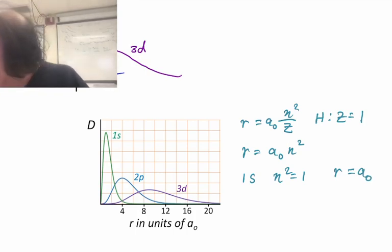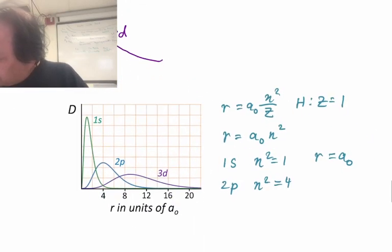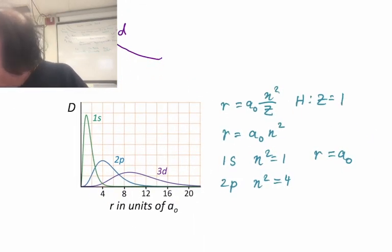We have 2p, where n squared, n is 2, is 4. r is a0 times n squared. r will be equal to 4a0.